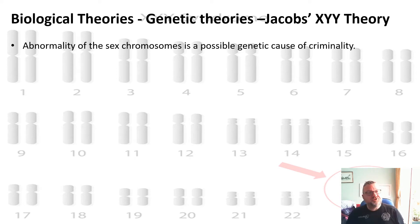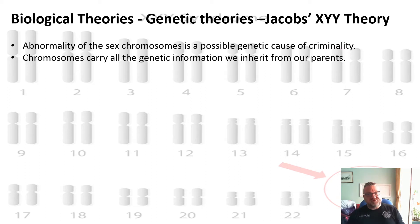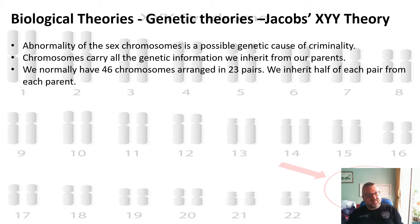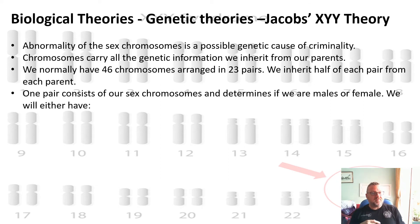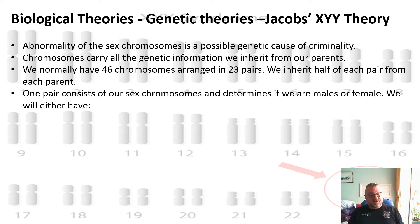Jacobs is saying that an abnormality of the sex chromosomes is a possible genetic cause of criminality. Chromosomes carry all the genetic information we inherit from our parents. We normally have 46 chromosomes arranged in 23 pairs — we inherit half of each pair from each parent: 23 from the mother and 23 from the father. One pair consists of our sex chromosomes, and they determine whether we're male or female. This is essentially back to GCSE biology, but if you're doing A-level criminology, maybe you've forgotten it.